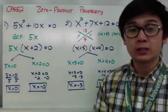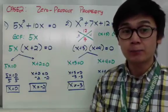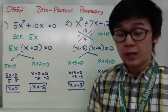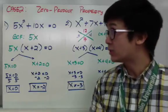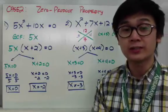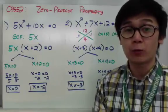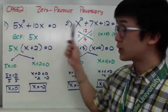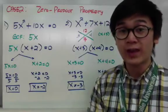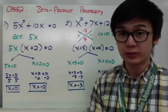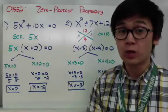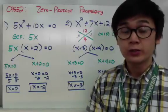I'm going to call my next example Case 2 of the Zero Product Property. I'm calling it Case 2 because in this example, I can't use ZPP right away — I need to factor the equation first using a factoring technique before I can apply ZPP.